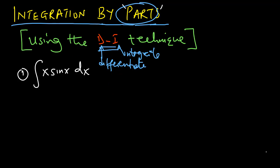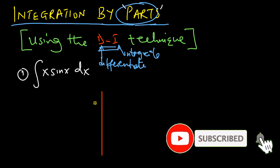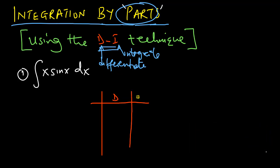Let's begin with this example here. This is how we use the DI method. I begin by drawing a table with D on one column and I on the other column. Then I look at the two functions I want to integrate and see which function can be differentiated up to zero. X is a better choice for D, because I can differentiate X up to zero.